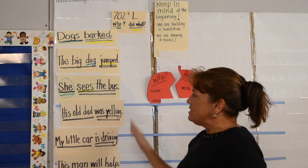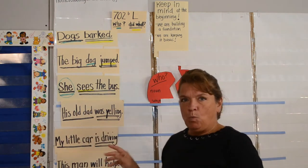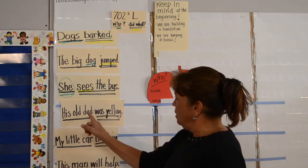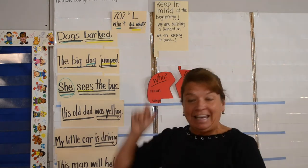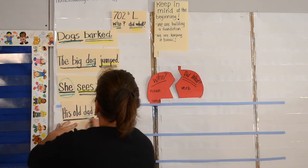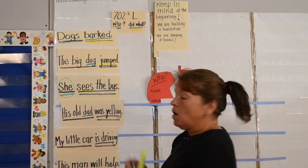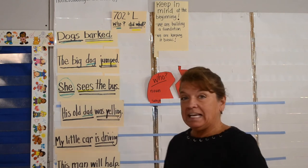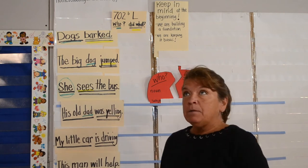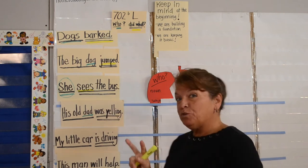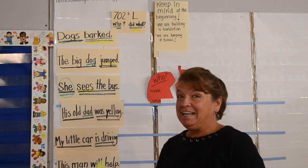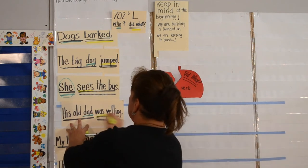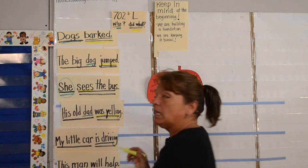His old dad was yelling. What is your noun in the complete who? Dad. So we underline 'dad' green. Our complete did what? Was yelling. This one has two verbs — 'was' and 'yelling' — so we have to underline both 'was' and 'yelling' with yellow.